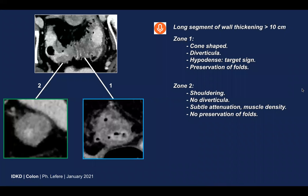To summarize: the long segment of wall thickening has two zones. Zone one: cone-shaped aspect, diverticula present, hypodense aspect, preservation of folds. Zone two: shouldering, no diverticula, subtle attenuation with muscle density, and no preservation of folds.